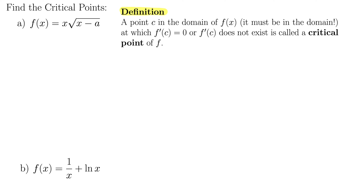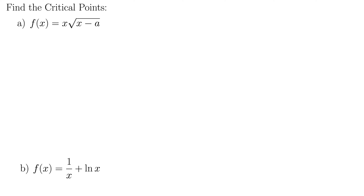Remember that we're only looking for the x values here. For this derivative in part a, I'm going to rewrite this first as f of x equals x times x minus a to the 1 half.